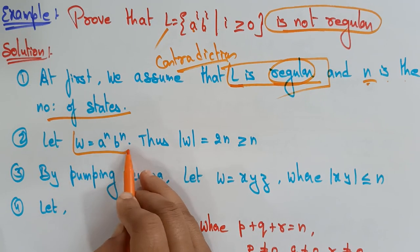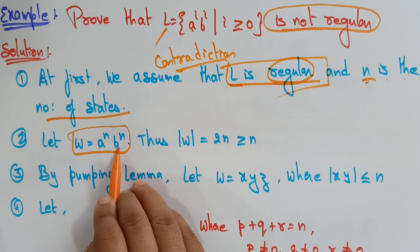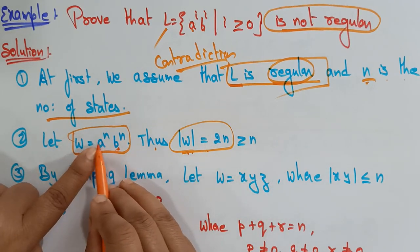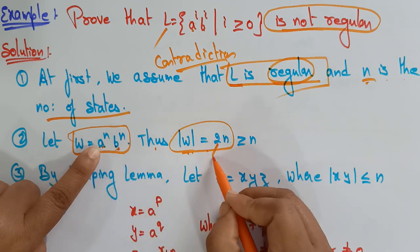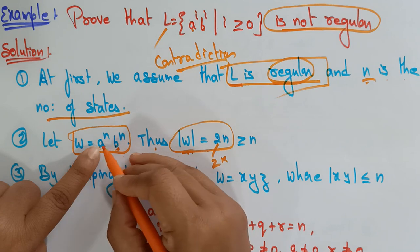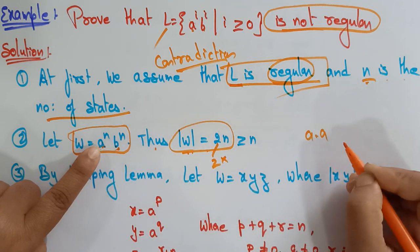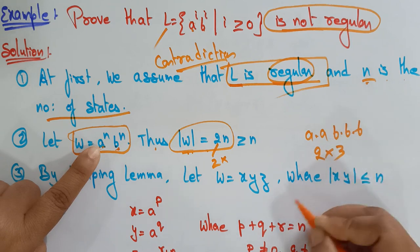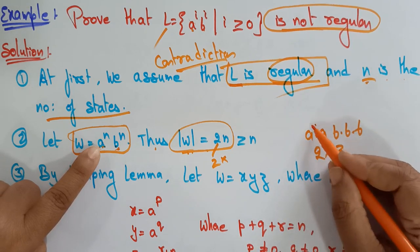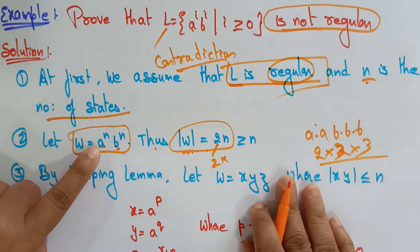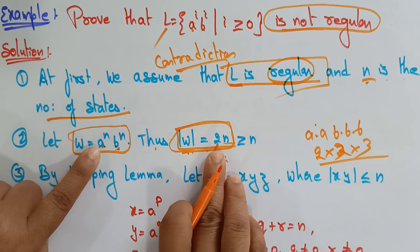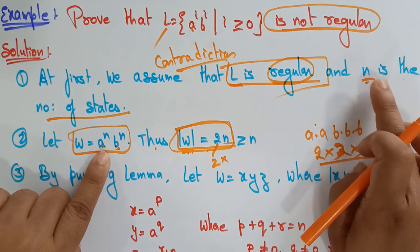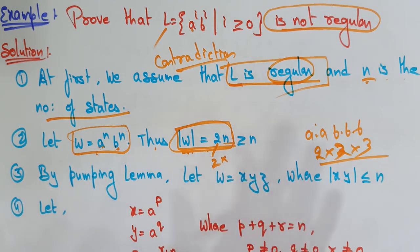The second step: let the string W = aᴺbᴺ. Thus |W| = 2N. Since there are two terms, A and B, and N is the number of states representing each, we get 2N total, and 2N should be greater than or equal to N. This satisfies the pumping lemma length condition.